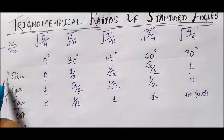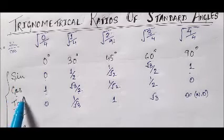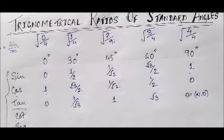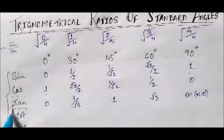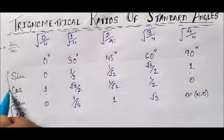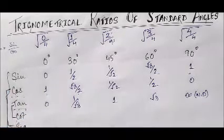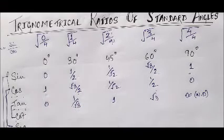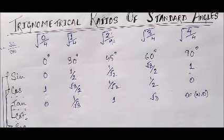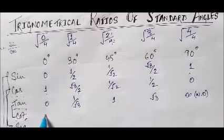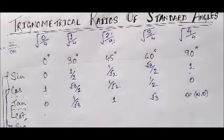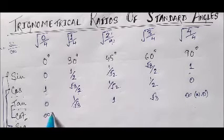Now we have the values for sin, cos, and tan. For cot, sec, and cosec: cot is the reciprocal of tan, sec is the reciprocal of cos, and cosec is the reciprocal of sin. For cot 0, we get 1 divided by 0 — again dividing by zero — so the answer is infinity, or not defined. Cot 30 is root 3, cot 45 is 1, cot 60 is 1 by root 3, and cot 90 is 0.